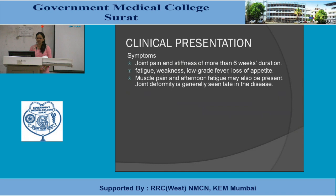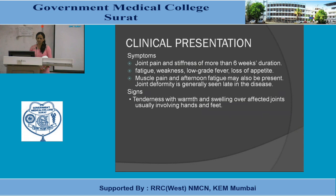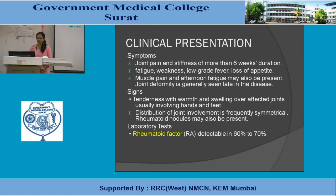Joint deformity is generally seen late in the disease. Signs include tenderness with warmth and swelling over affected joints, usually involving hands and feet, with frequently symmetrical distribution of joint involvement. Rheumatoid nodules may also be present at multiple sites.